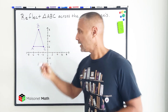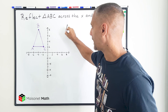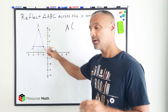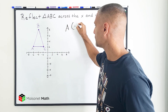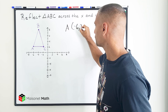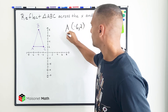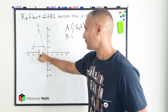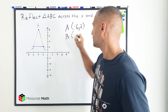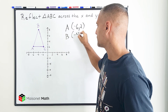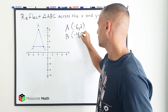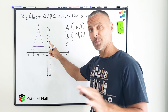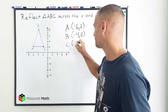So point A is currently located at negative 6, positive 2. Point B is currently located at negative 4, positive 8. And C is currently located at negative 2, positive 2.